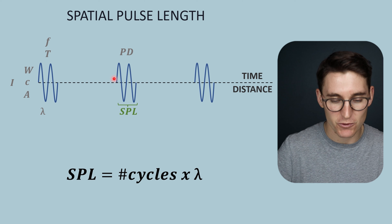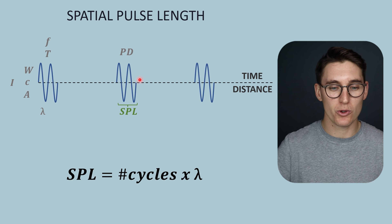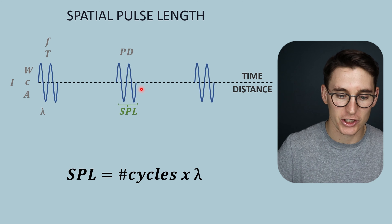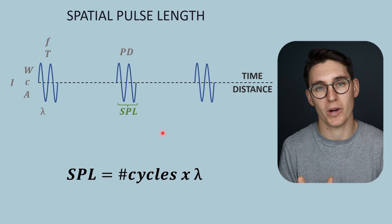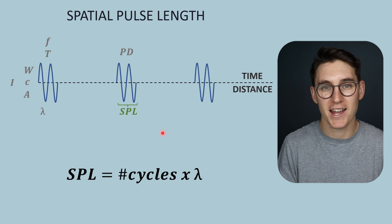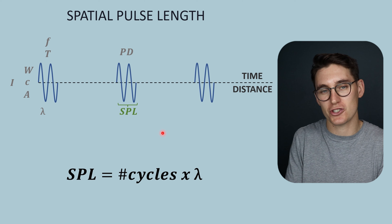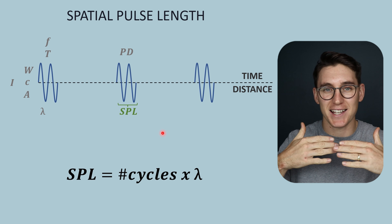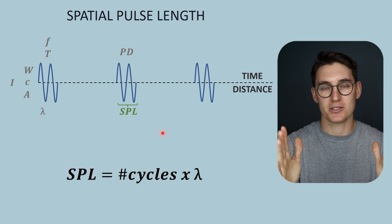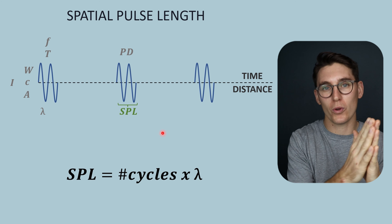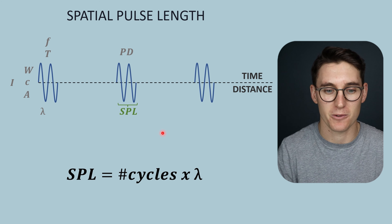Pulse duration and spatial pulse length are both dependent on the frequency and wavelength of the wave — these are things we cannot change. When we put our ultrasound transducer to the skin we are generating a set frequency, so we can't change the length of this pulse. We can't change the distance or the time that the pulse is emitted during our transmit part of our cycle.